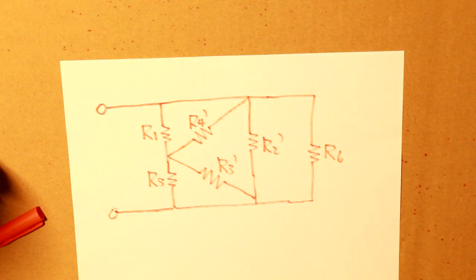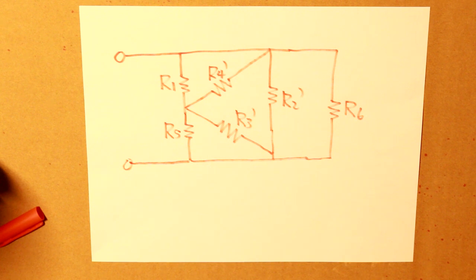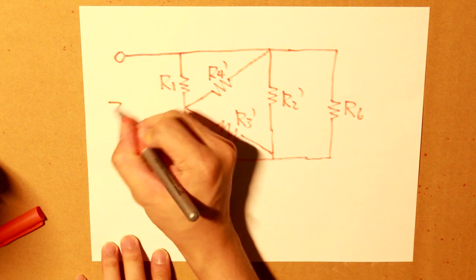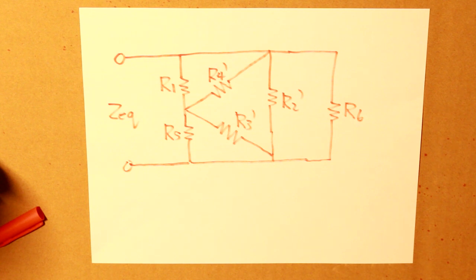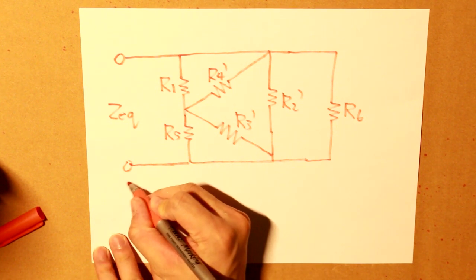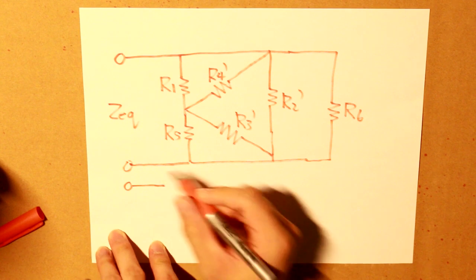Now the question is, will this new formation be able to help us simplify and to find our equivalent resistance overall? Well, let's draw the circuit a little bit more clearly.